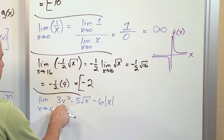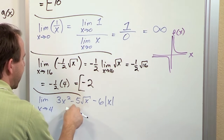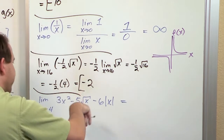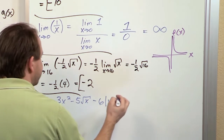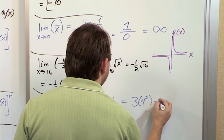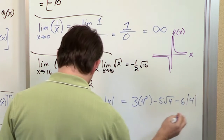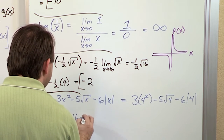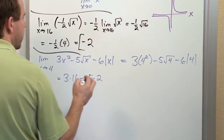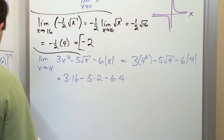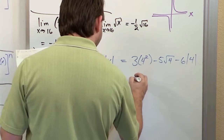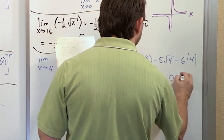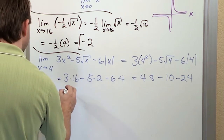As I work with the polynomial term, I can plug the value in. With the square root, we've done one just like it — I can plug the value in there too. And absolute value behaves in a similar way. So that's what allows me to just plug in everywhere. I get 3 times 4 squared minus 5 times the square root of 4 minus 6 times the absolute value of 4, which is 3 times 16 minus 5 times 2 minus 6 times 4. That gives 48 minus 10 minus 24, and the final answer is 14.